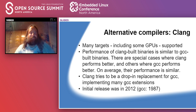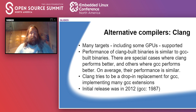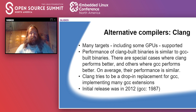Getting back to what clang can do — it has a lot of targets, including some interesting additional ones like targets for various GPUs, which is interesting if you're trying to split workloads between the CPU and GPU. There are special cases where one compiler will perform better; on average the performance is similar. Clang is trying to be a drop-in replacement for gcc, so it implements a lot of gcc extensions. If you have code that was developed only for gcc, there's a good chance it will work with clang anyway — not a hundred percent, but pretty good.